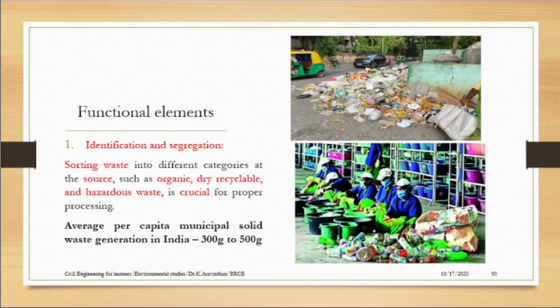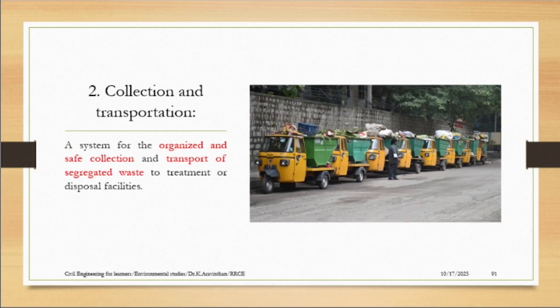Identification and segregation is the first process. In India, each and every person generates 300 to 500 grams of waste per day — we are responsible for 0.5 kg of waste being dumped. The government measures this in per capita terms. CPCB — the Central Pollution Control Board — has taken these statistics.